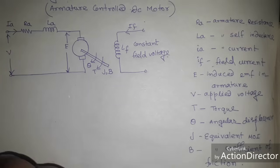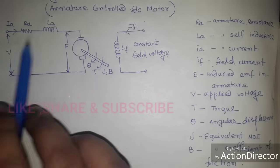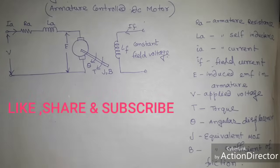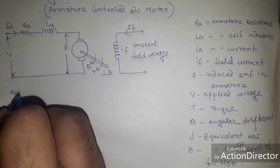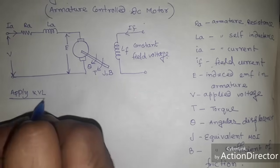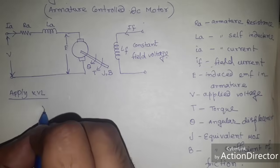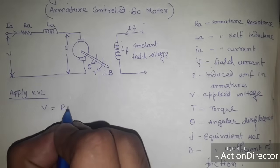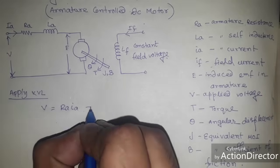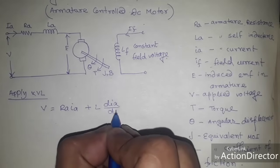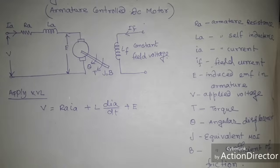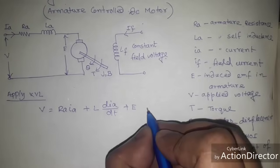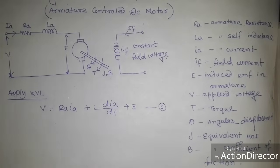First of all, we apply the KVL equation in this circuit. Applying KVL, we can write: V equals RA·IA plus LA·(dIA/dt) plus E, where E is the induced EMF in the armature. We mark this as equation 1.